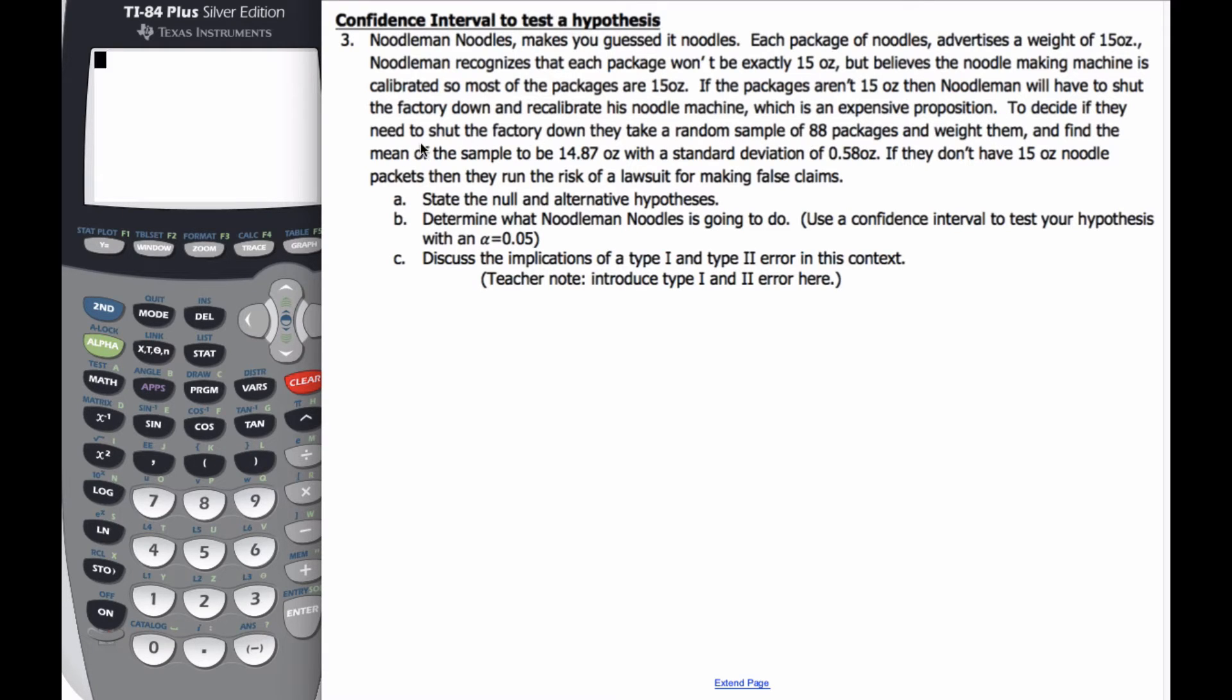To decide if he needs to shut the factory down, they take a random sample of 88 packages, weigh them, and find that the mean of the sample is 14.87 with a standard deviation of 0.58. If they don't have 15 ounce noodle packages, they run the risk of a lawsuit for making false claims.